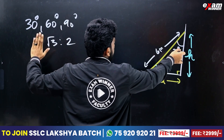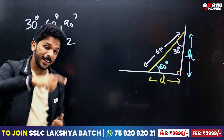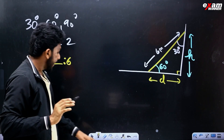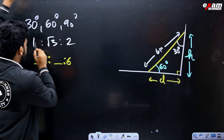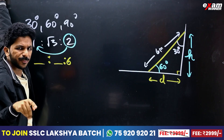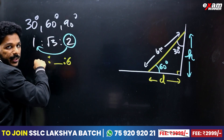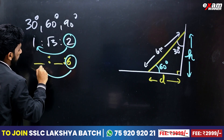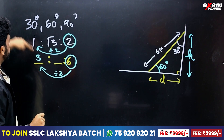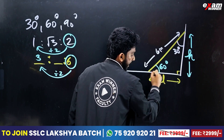We have 30, we have 60, we have 90. Let's fill in the ratios. We have 30 opposite 1 and 60 opposite √3. Now let's take the ratio. If you have 90 opposite, you have 2. Half is divided by 2. If you have 30 opposite, you get 1. If you have 60 opposite, you get √3. So the distance is √3.